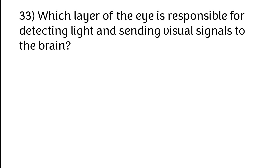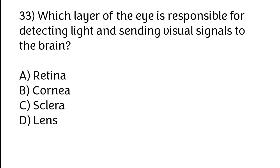Which layer of the eye is responsible for detecting light and sending visual signals to the brain? Options: A) Retina, B) Cornea, C) Sclera, D) Lens. The correct answer is option A, retina.